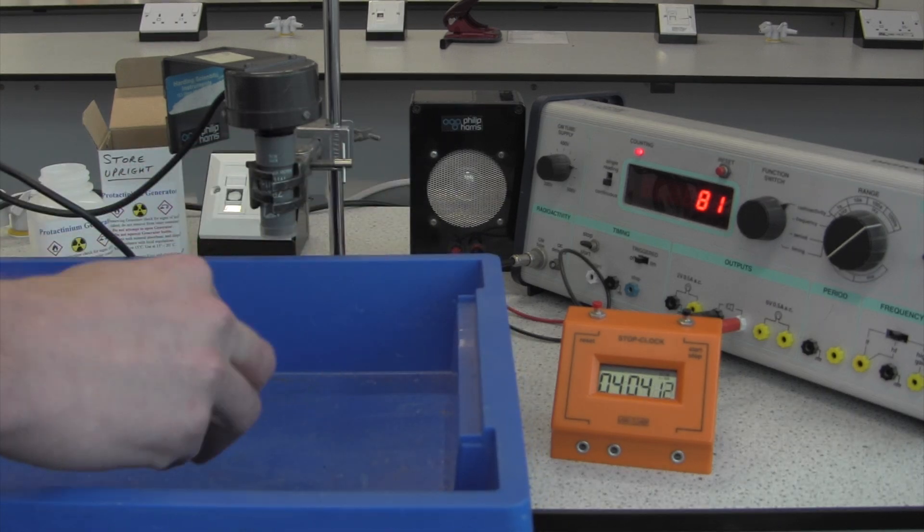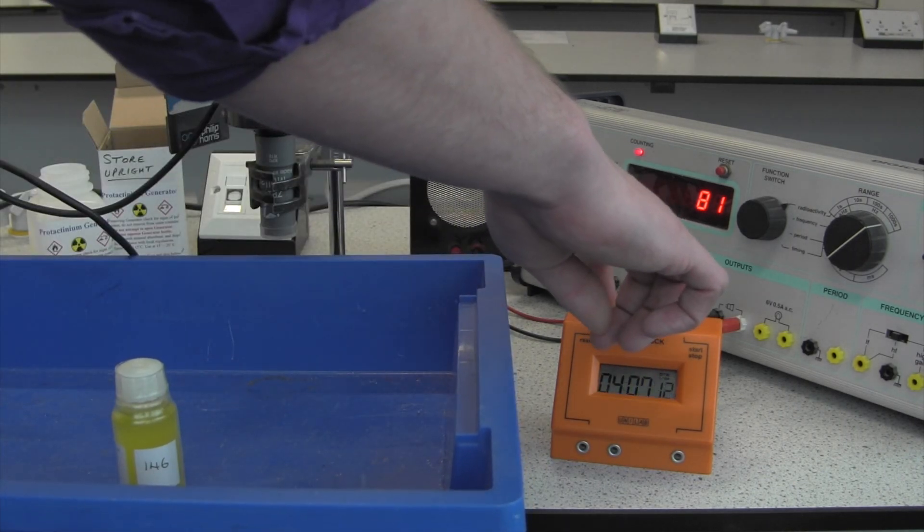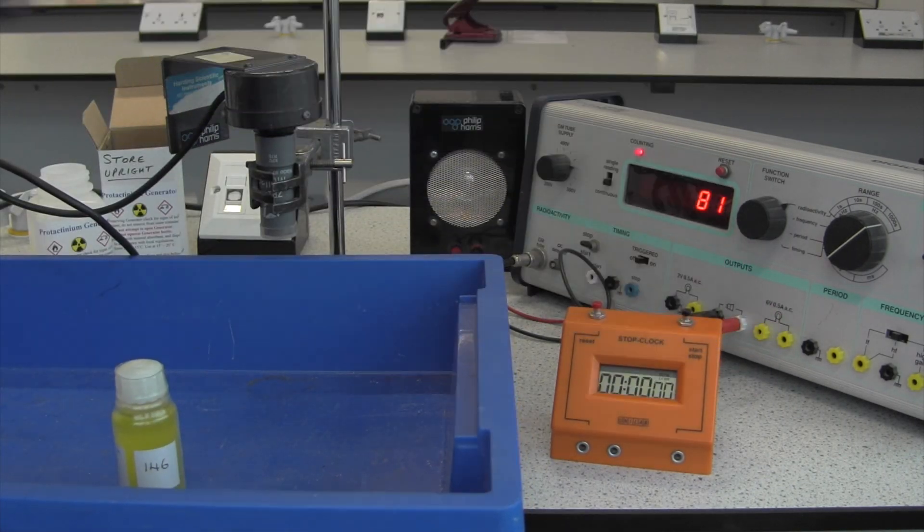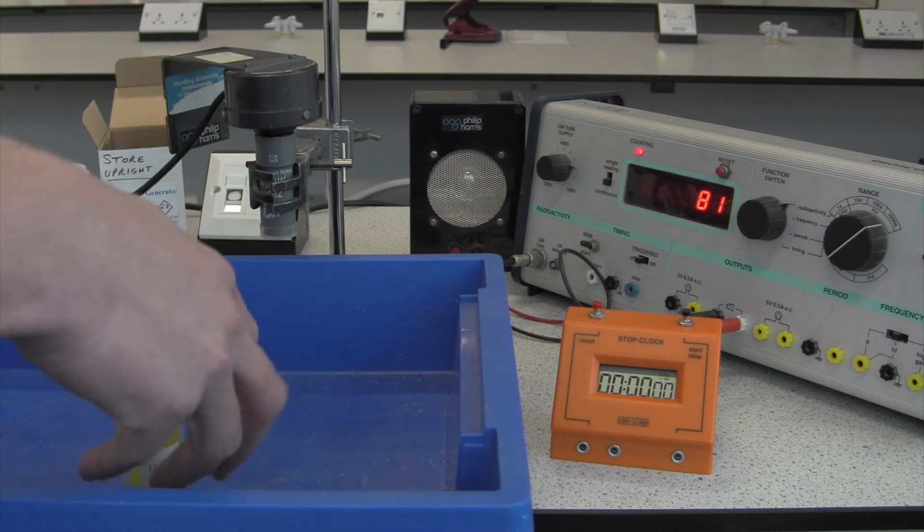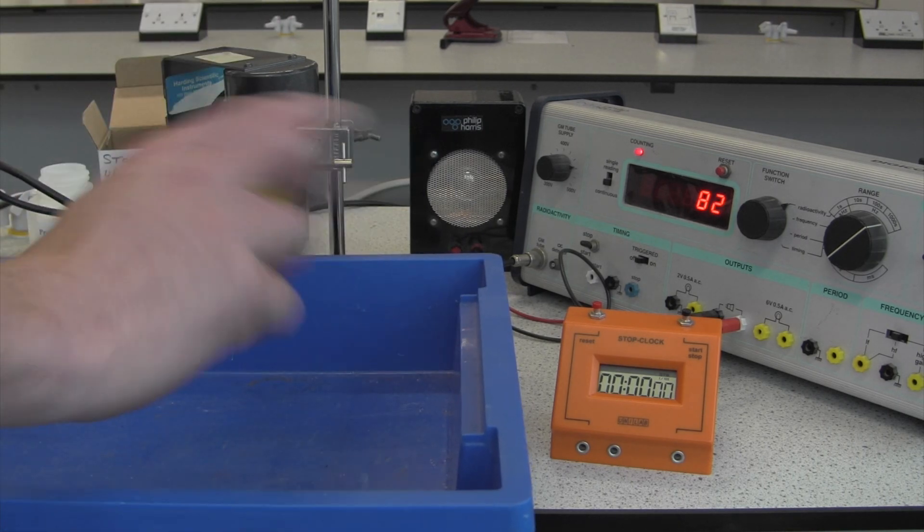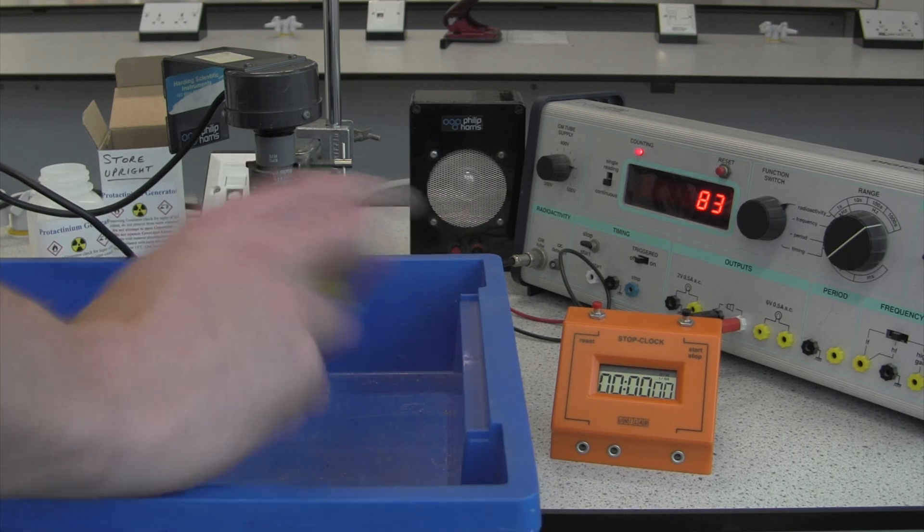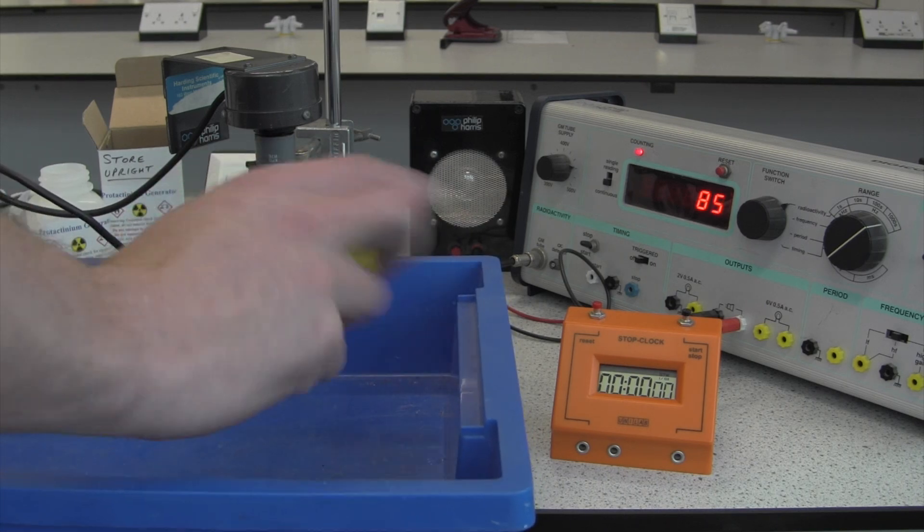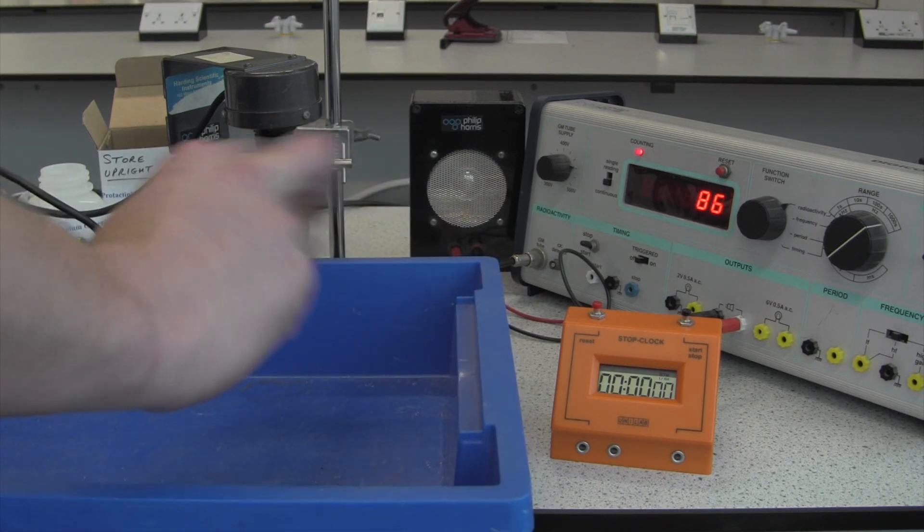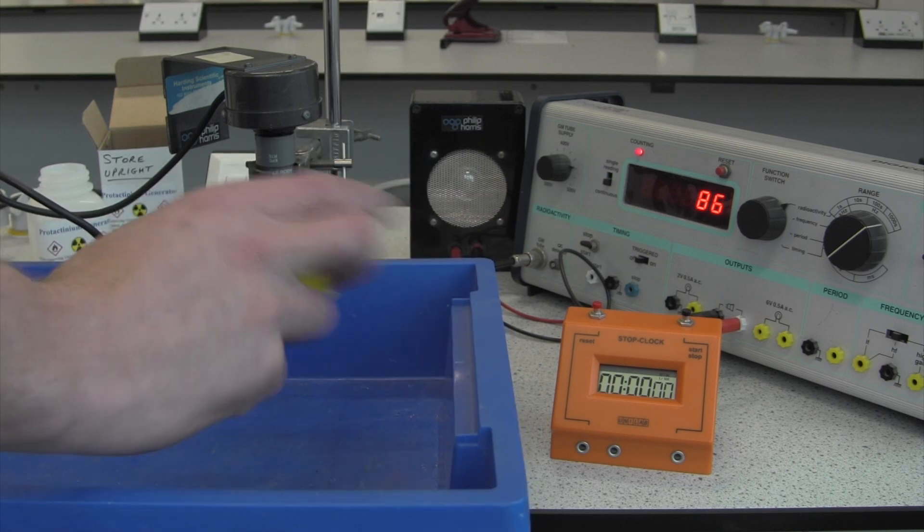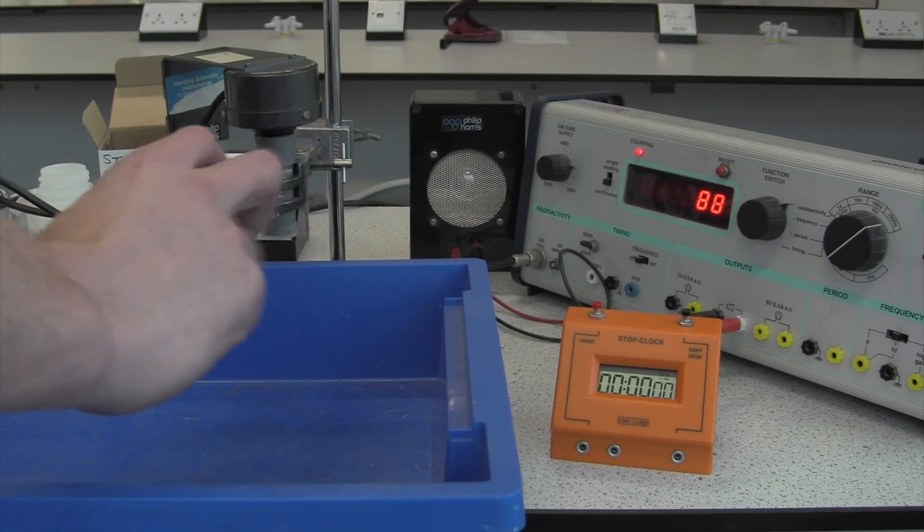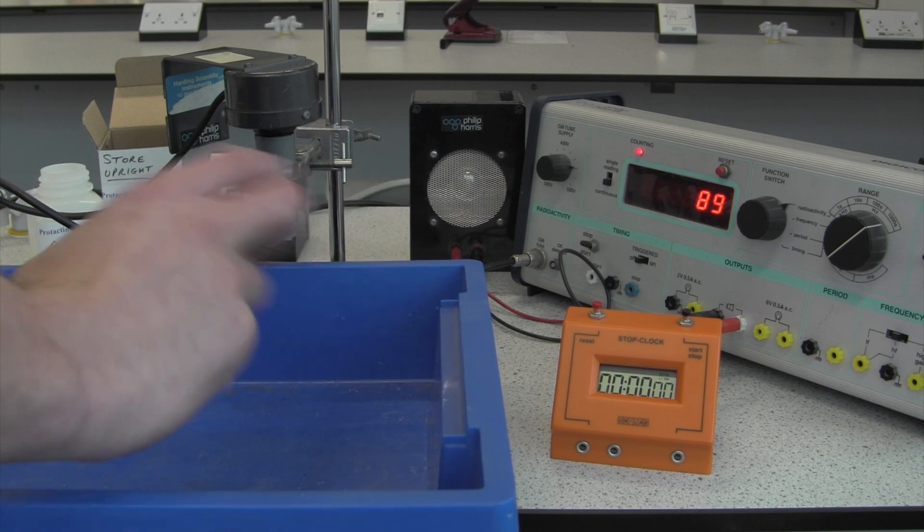So something that we've got to do before we take our measurement is just stop our stop clock and reset it. And we need to reset the Geiger counter, start the stop clock, and place our protactinium generator underneath the Geiger-Muller tube.